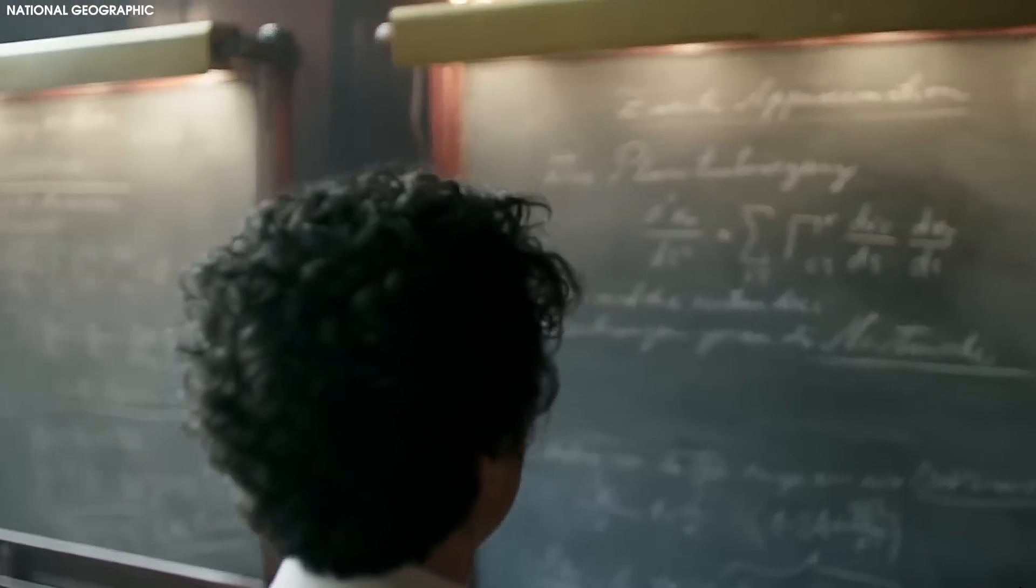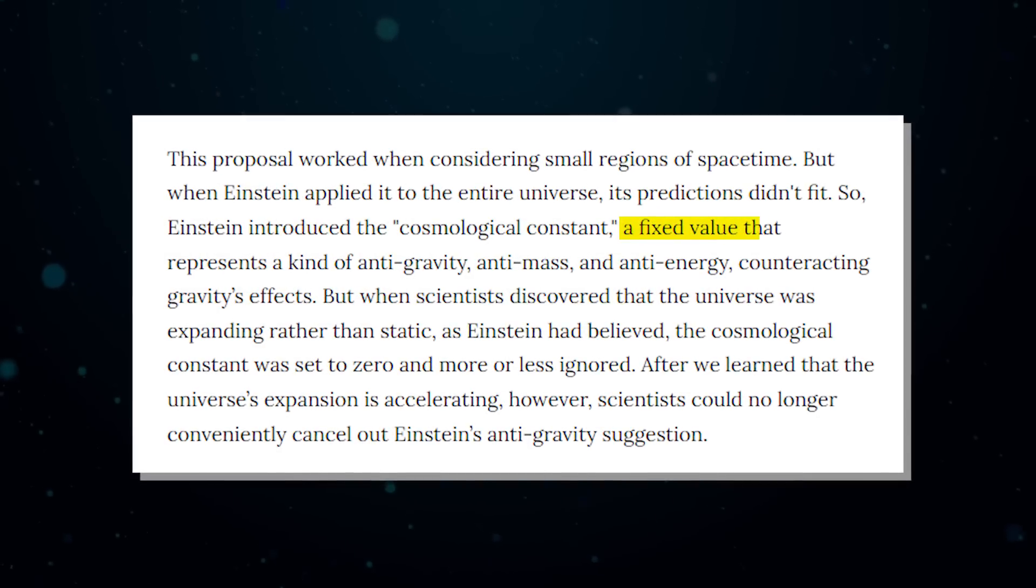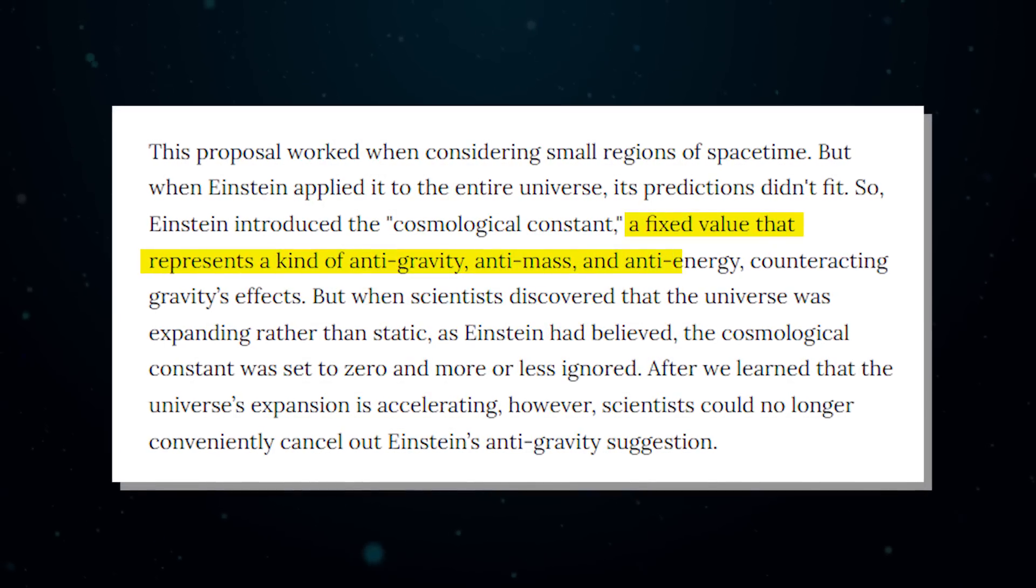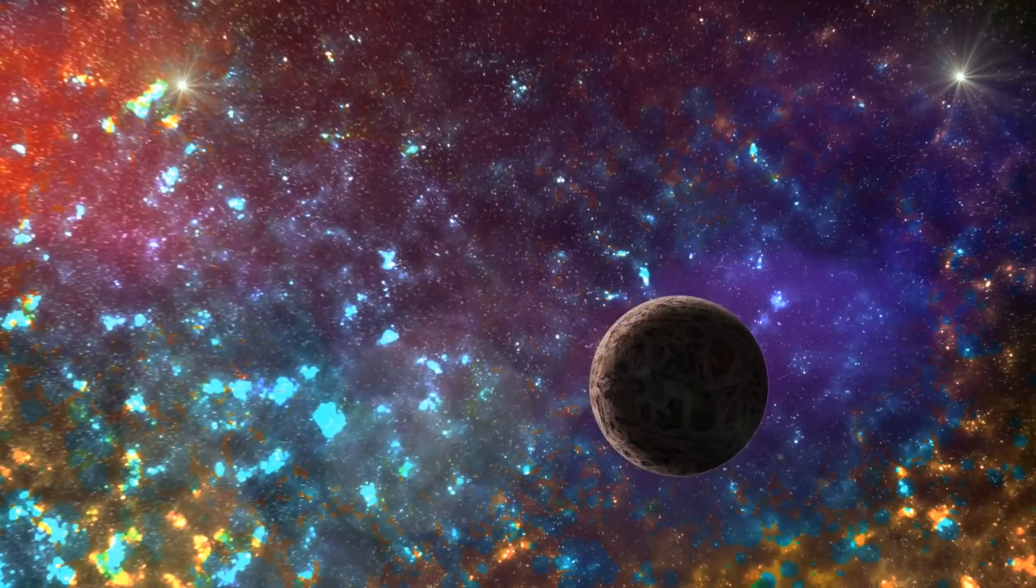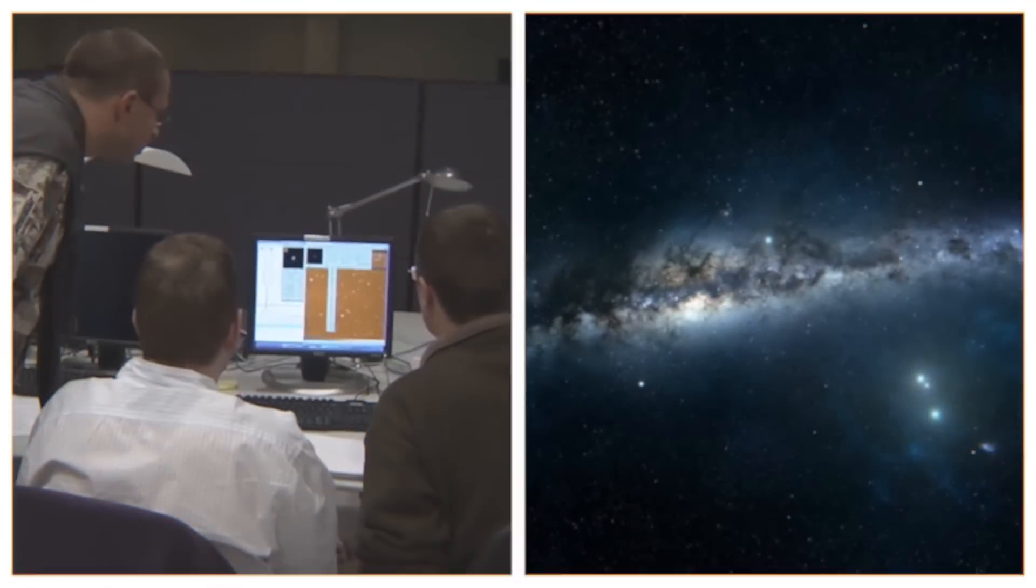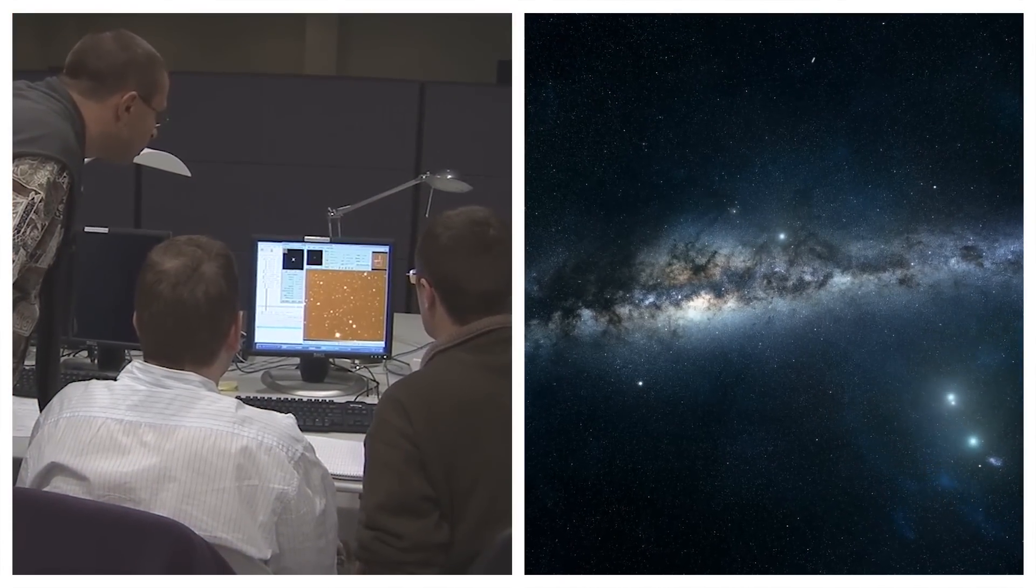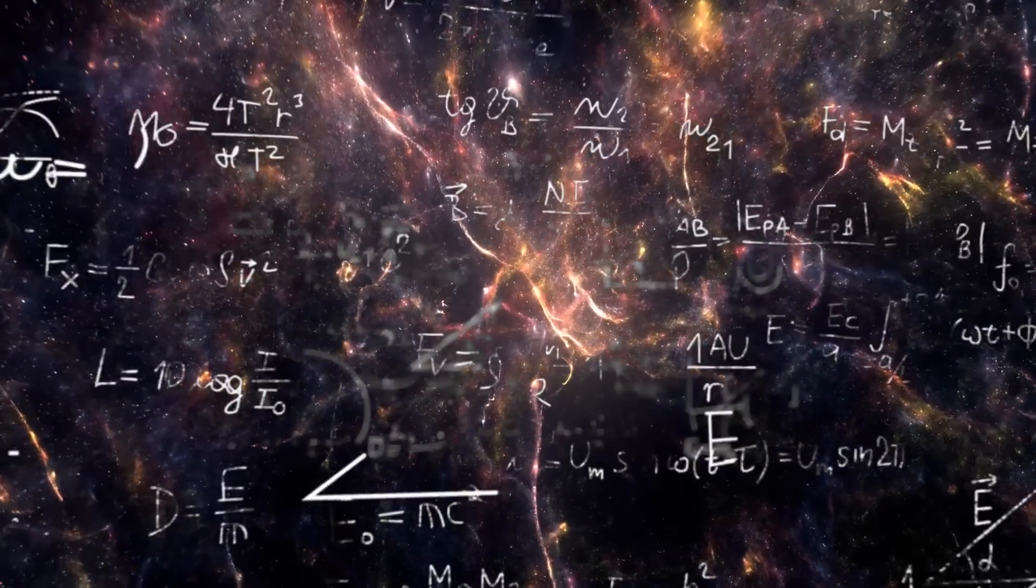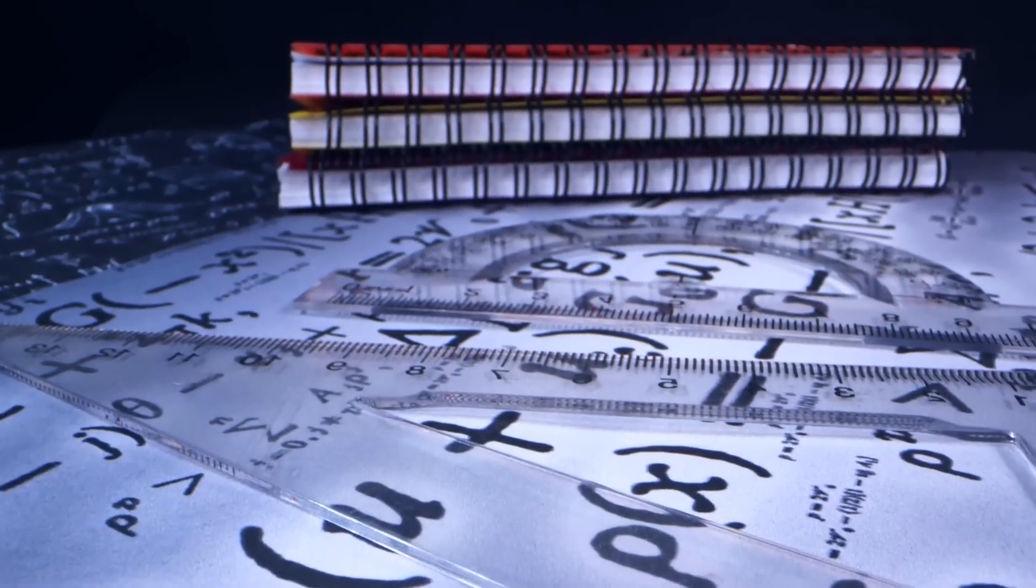So Einstein introduced the cosmological constant, a fixed value that represents a kind of anti-gravity, anti-mass, and anti-energy, counteracting gravity's effects. But when scientists discovered that the universe was expanding rather than static, as Einstein had believed, the cosmological constant was set to zero and more or less ignored.